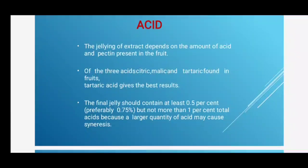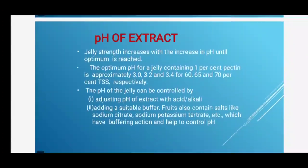Gelling of extract depends on the amount of acid and pectin present in the fruit. Of the three acids — citric acid, malic acid, and tartaric acid — tartaric acid gives the best result. The final jelly should contain at least 0.5%, preferably 0.75%, but not more than 1% total acid, because a larger quantity of acid may cause syneresis — the oozing out of fluid from the jelly, which can attract microbes and spoil the jelly.